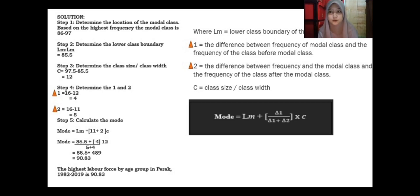Determine the before and after median class frequencies. We get 4 before and 5 after. Step five: calculate the mode, we get 90.83. The highest labor force by age group in Perak 1982 to 2019 is 90.83.